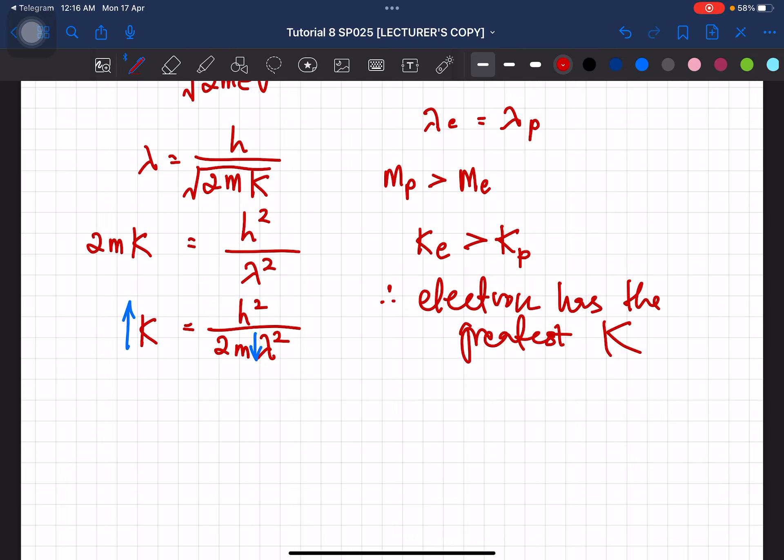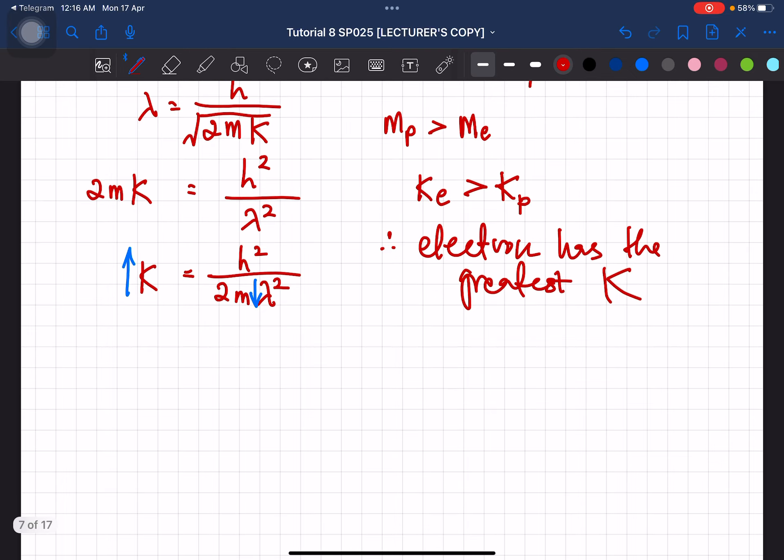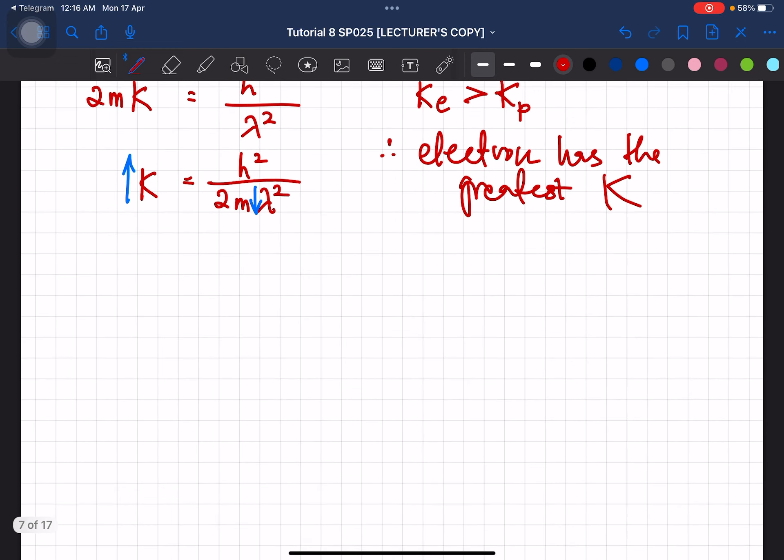Okay, itulah lah kamu tulis. Oh, you can also do the ratio lah. Kamu boleh buat ratio of kinetic energy of electron over kinetic energy of proton. Okay, so kalau kamu tengok yang ni, kamu akan dapat mass of proton over mass of electron.